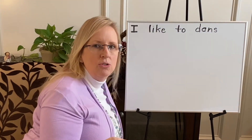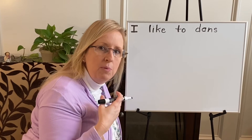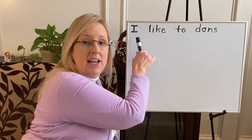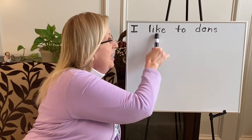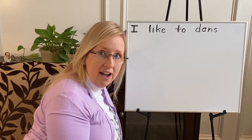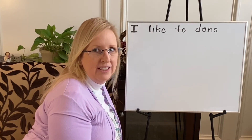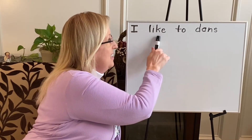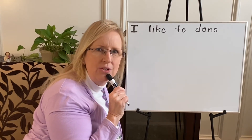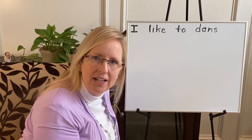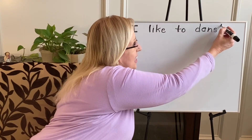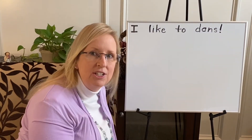Now I could use a period here or an exclamation mark depending on the amount of expression I want when I read it. If I want a period, I like to dance — and my voice stays fairly even throughout the entire sentence. Or if I'm really enthusiastic, I could say I like to dance! I am enthusiastic when I dance, so I am going to put an exclamation mark.